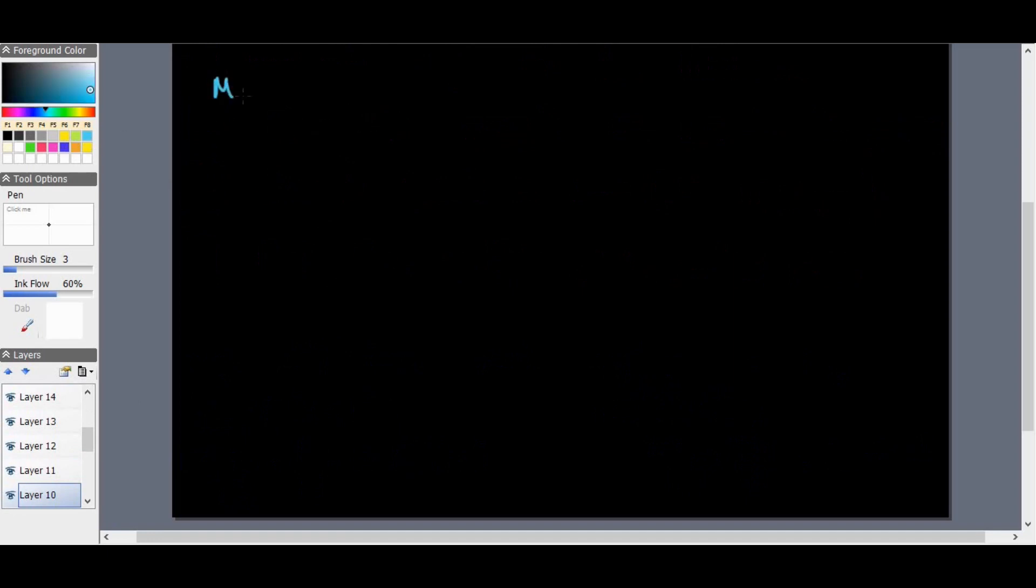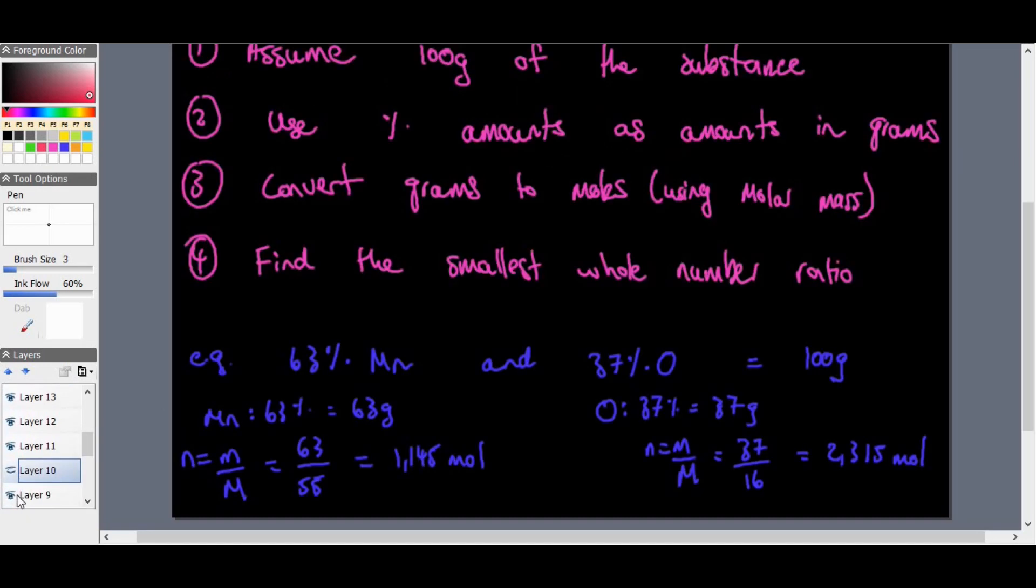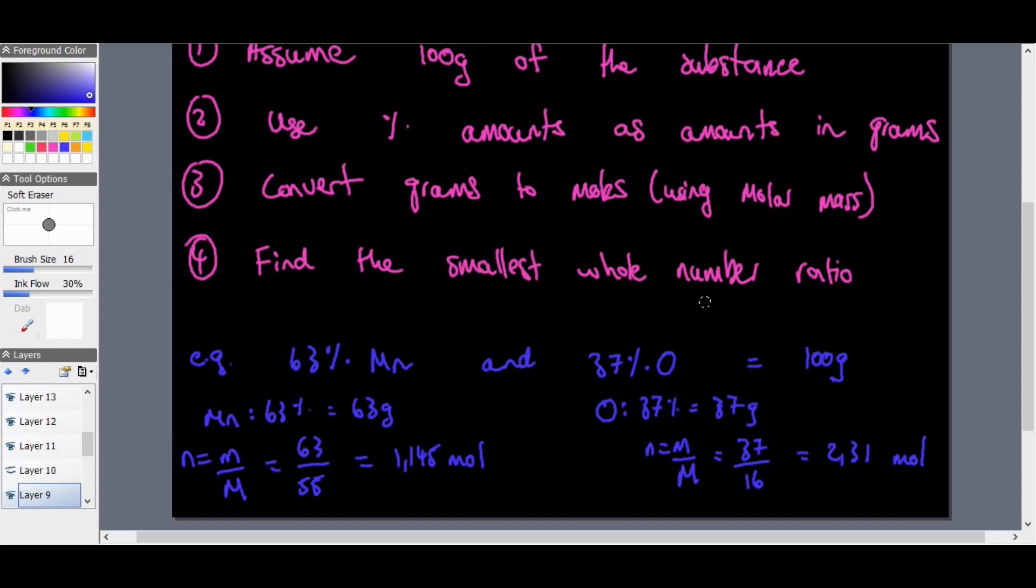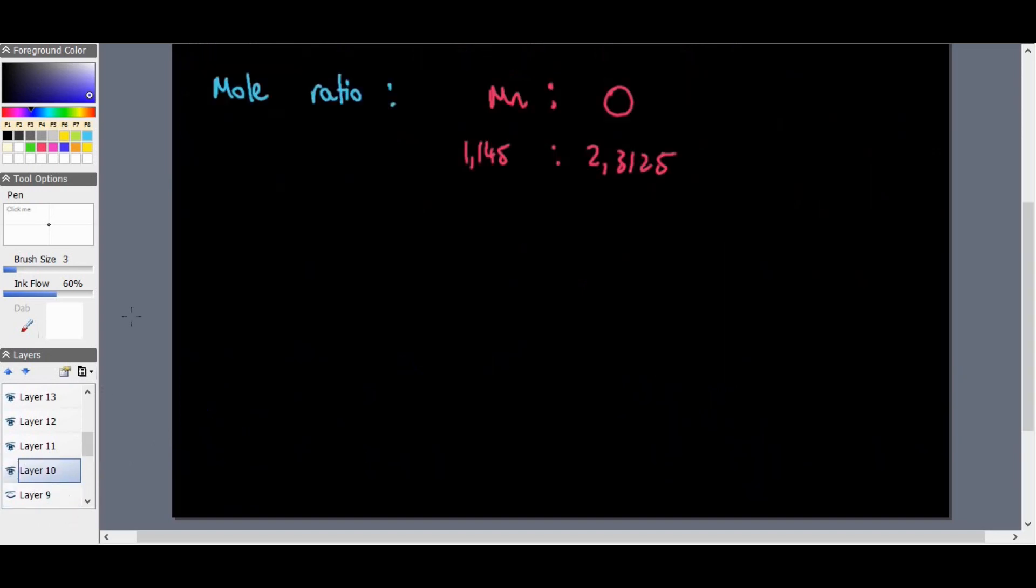So obviously, now the mole ratio, let's bring another color into the mix here. Mole ratio of manganese to oxygen, we've got 1.145 manganese is equal to 2.3125.